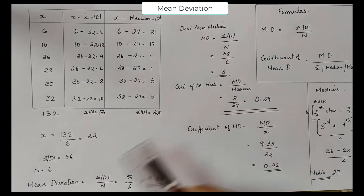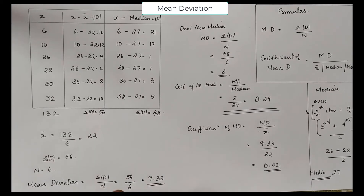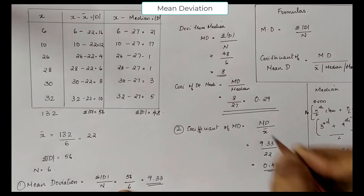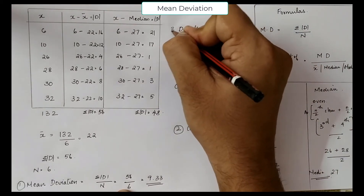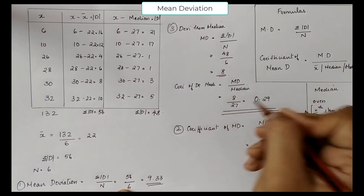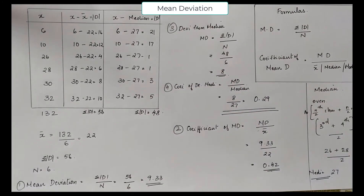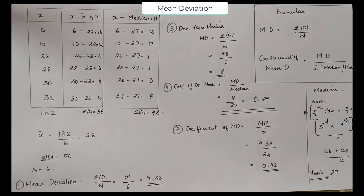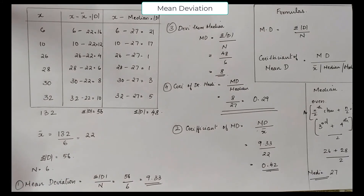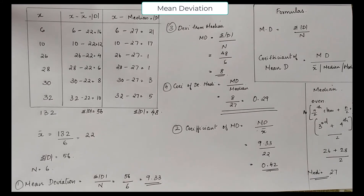So our final answers are: mean deviation from mean is 9.33 and coefficient of mean deviation is 0.42. Mean deviation from median is 8 and coefficient of mean deviation from median is 0.29. In this dataset there is no mode, so it is ill-defined. I hope you got an idea of how to find mean deviation for individual series. In the coming video, we will discuss mean deviation for continuous or discrete series. Thank you very much.